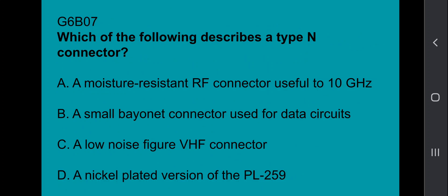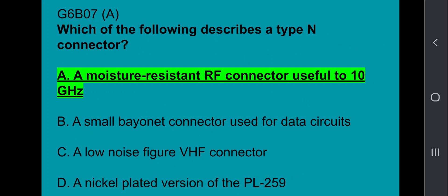G6B07: Which of the following describes a type N connector? A moisture resistant RF connector useful to 10 GHz.